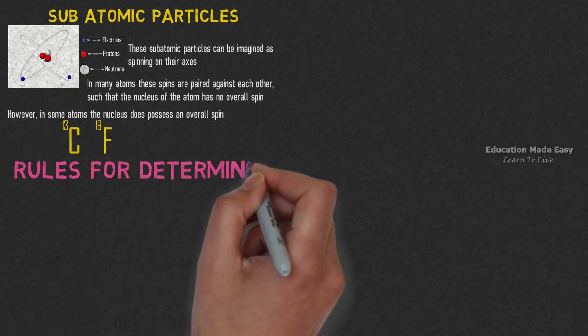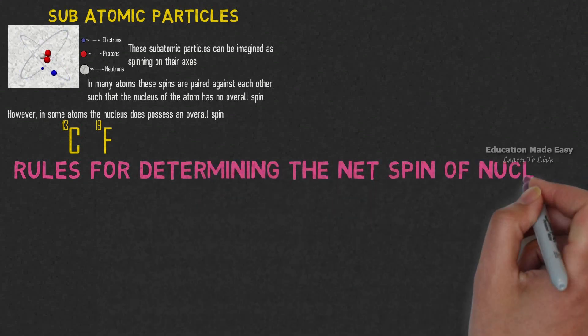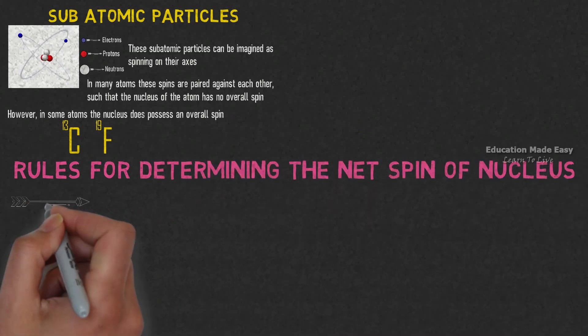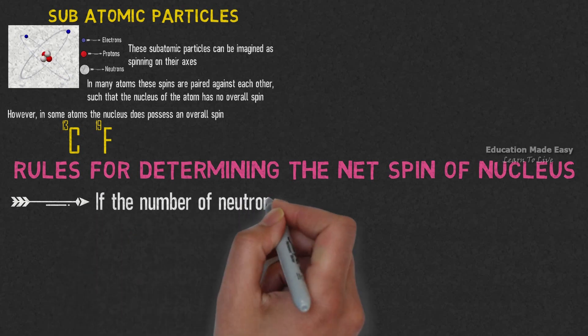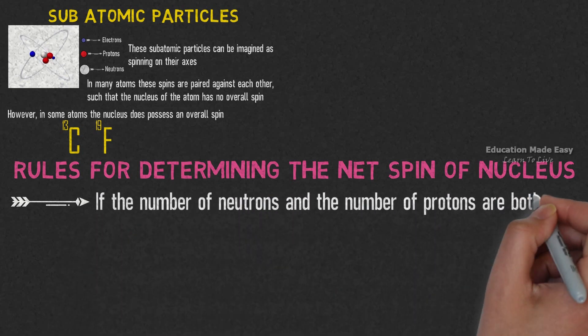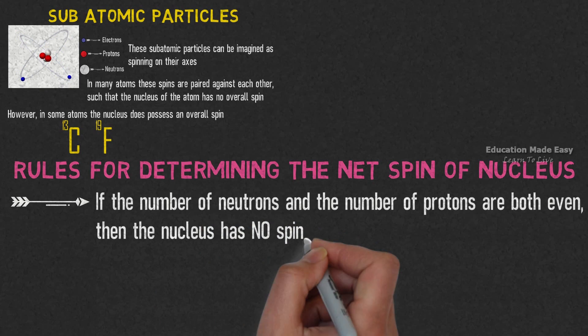Let us learn some rules which are used for determining the net spin of nucleus. Rule number 1: If the number of neutrons and the number of protons are both even, then the nucleus has no spin.